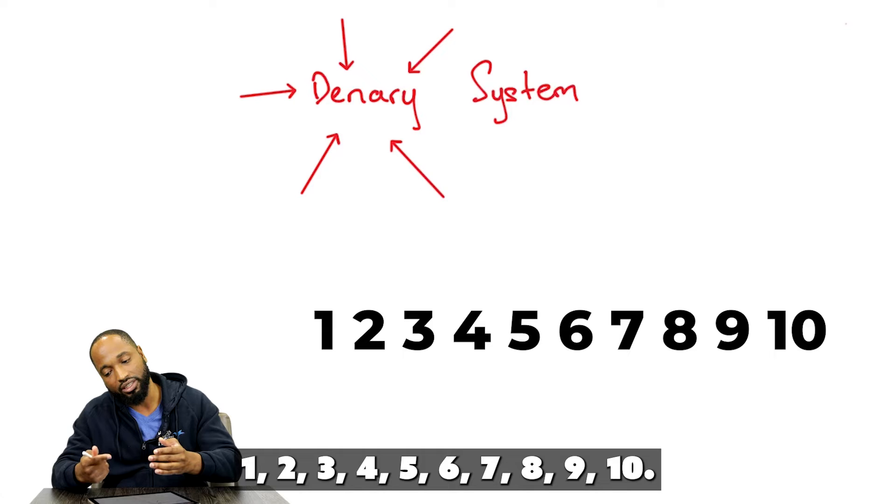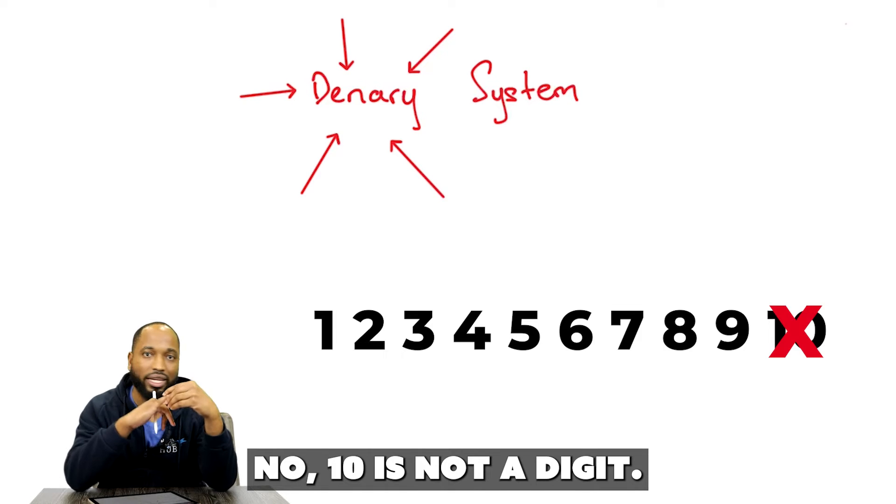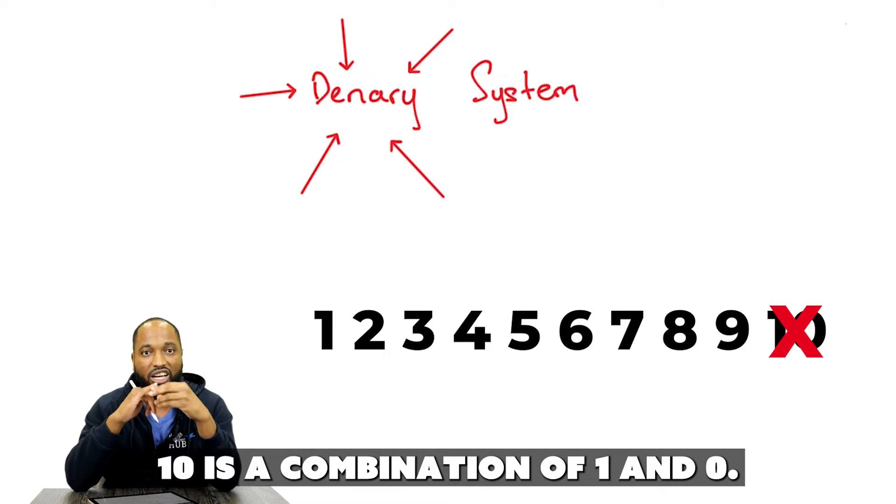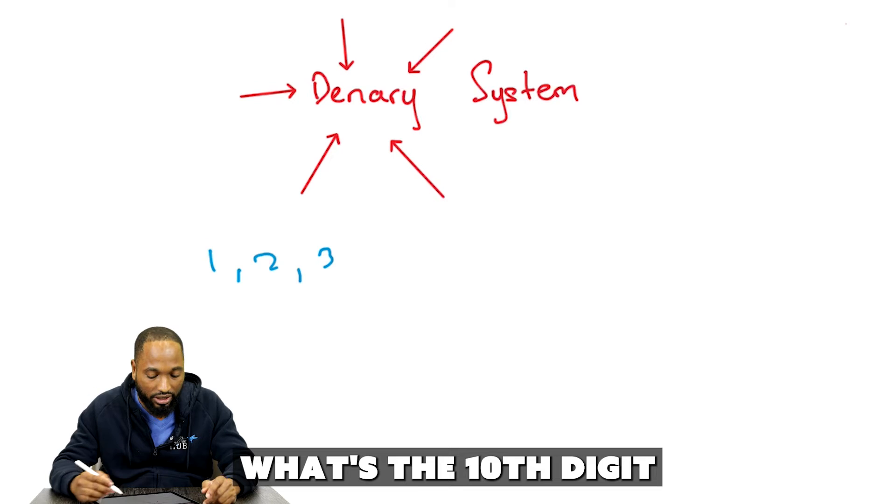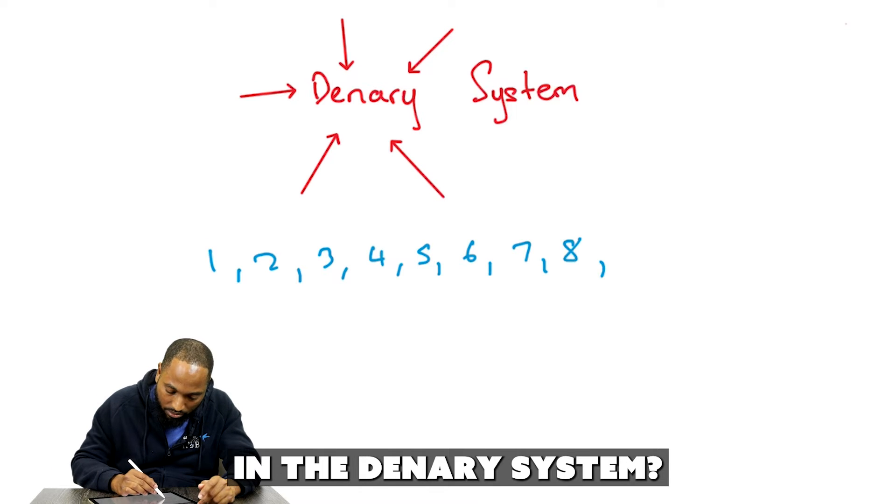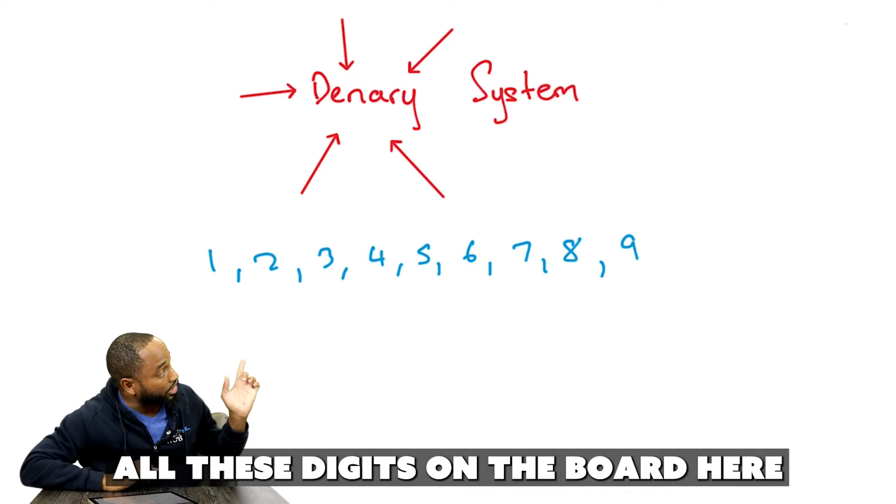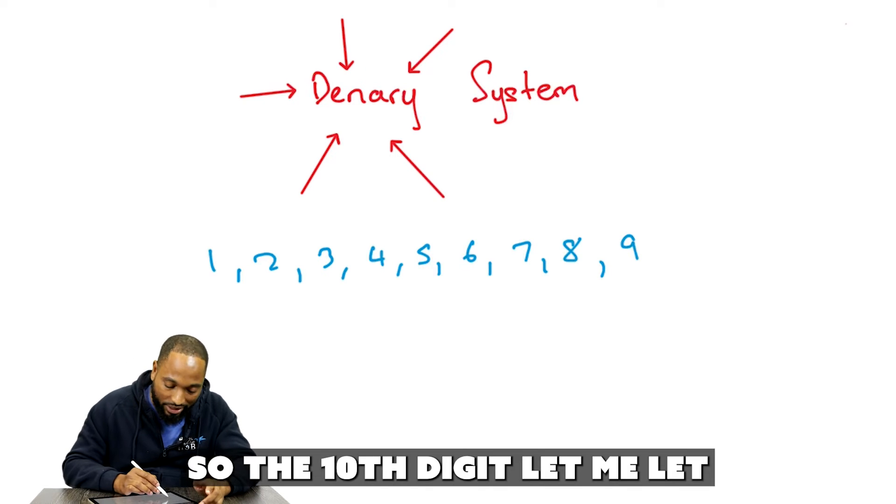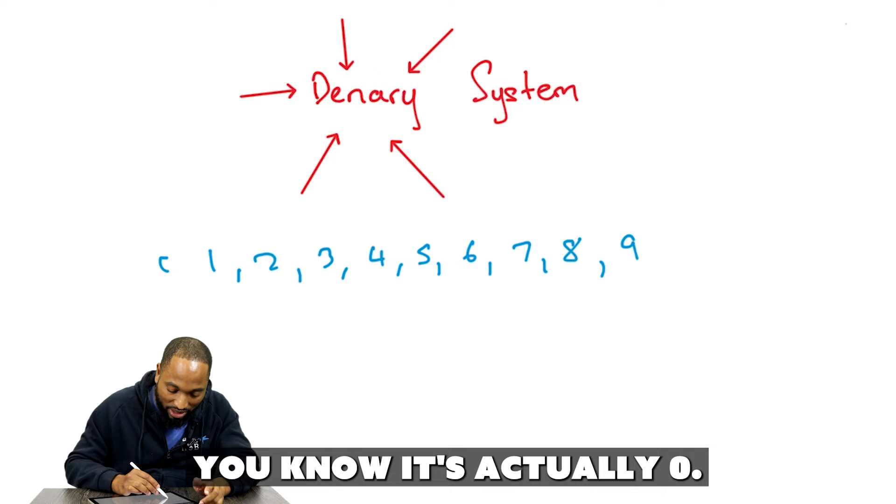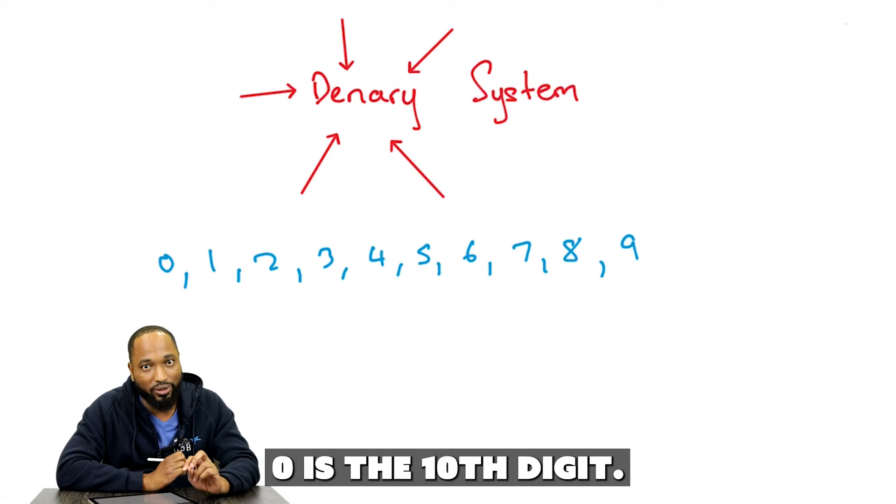1, 2, 3, 4, 5, 6, 7, 8, 9, 10. No, 10 is not a digit. 10 is a combination of 1 and 0. It's not a numeral by itself. What's the 10th digit in the denary system? If I count up all these digits on the board here, I only get 9. So, the 10th digit, let me let you know, it's actually 0. 0 is the 10th digit.